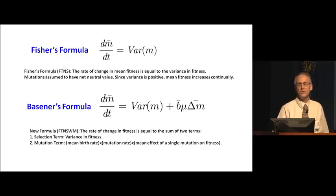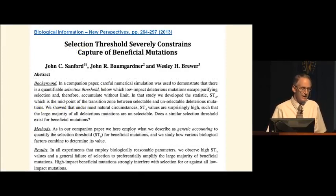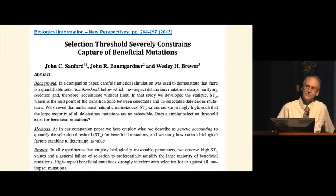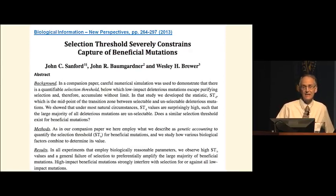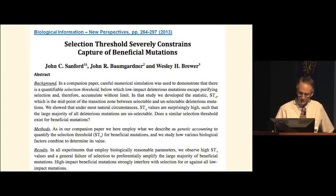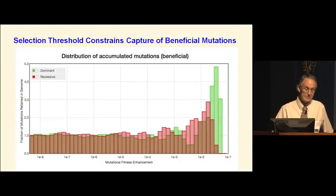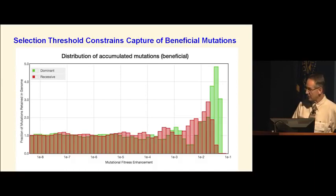I organized a symposium at Cornell on the topic of biological information: new perspectives. The proceedings are available, and I have a synopsis for those interested. That symposium addressed three questions: what is biological information, where does it come from, and can it be sustained or is it inherently subject to entropic decay? One finding we published in those proceedings was that most beneficial mutations are too subtle to be selected — they are invisible to natural selection.